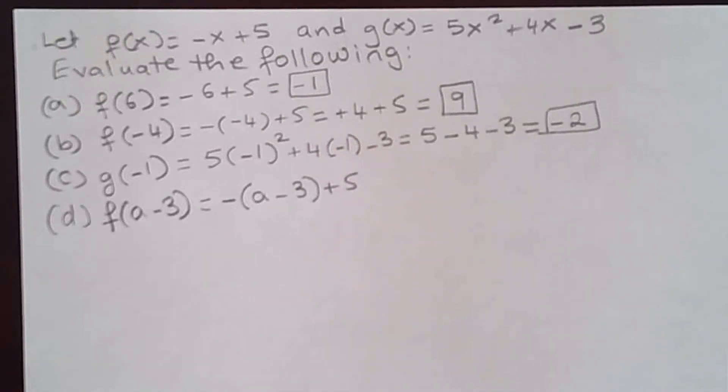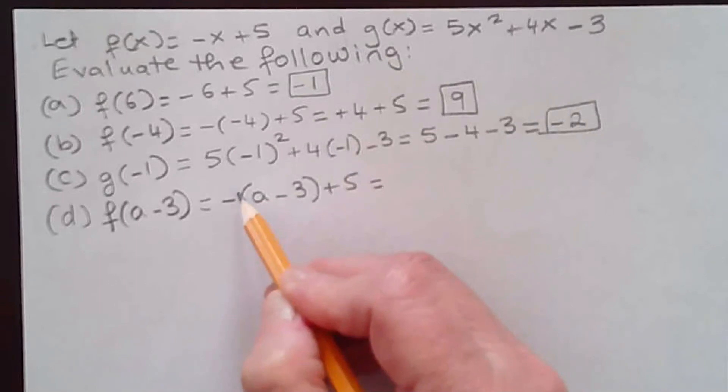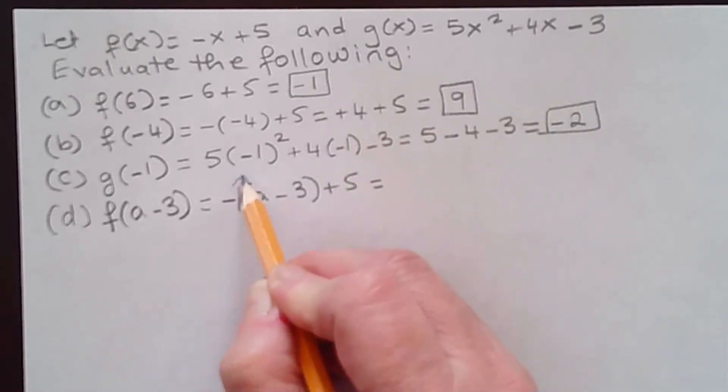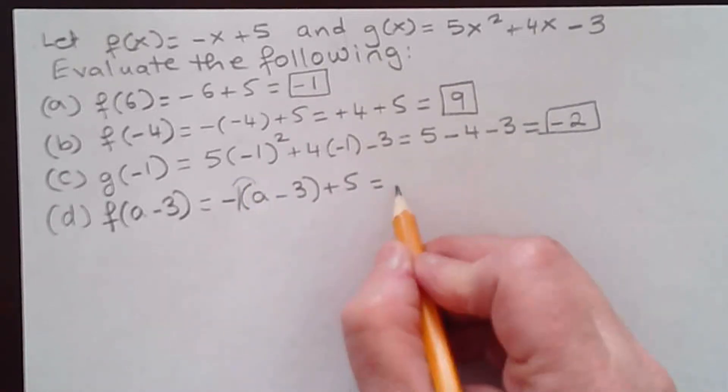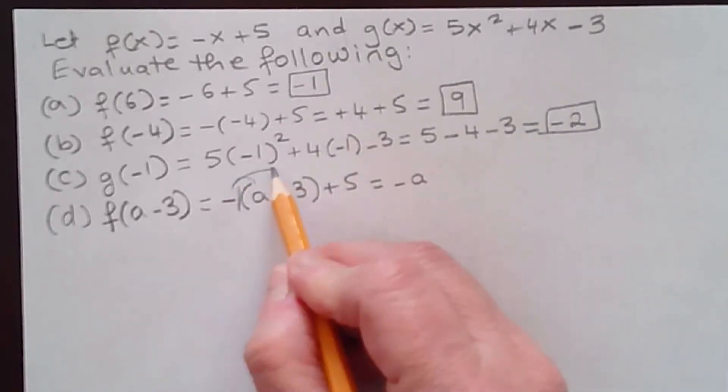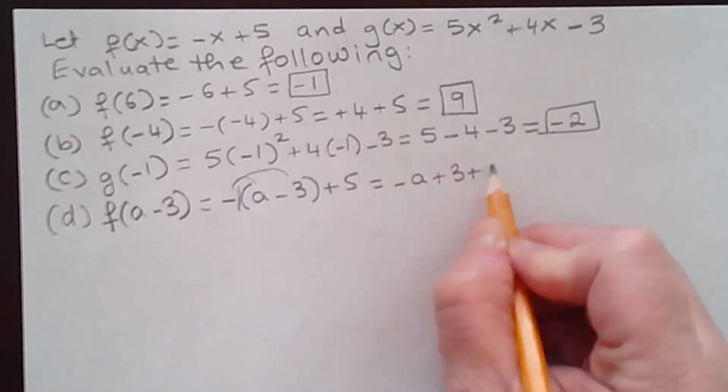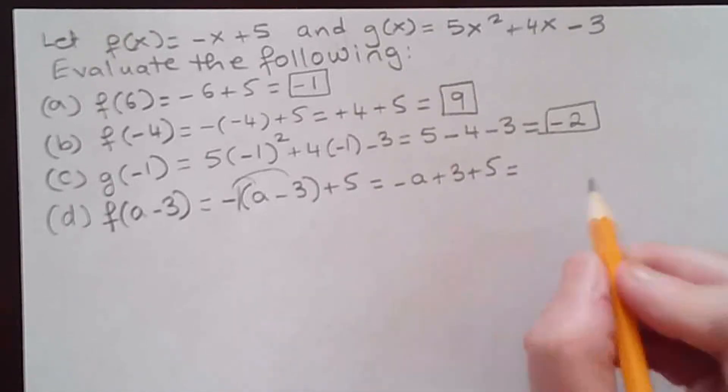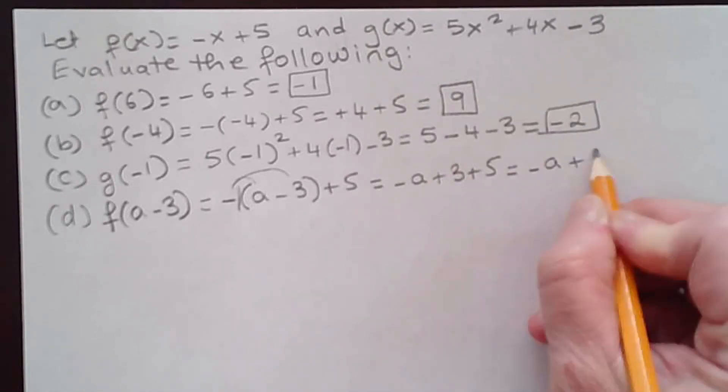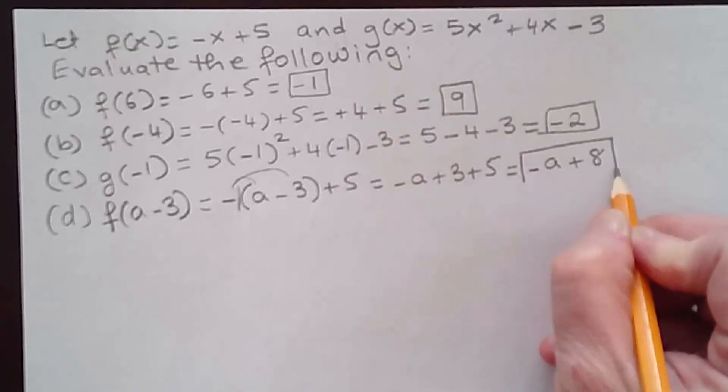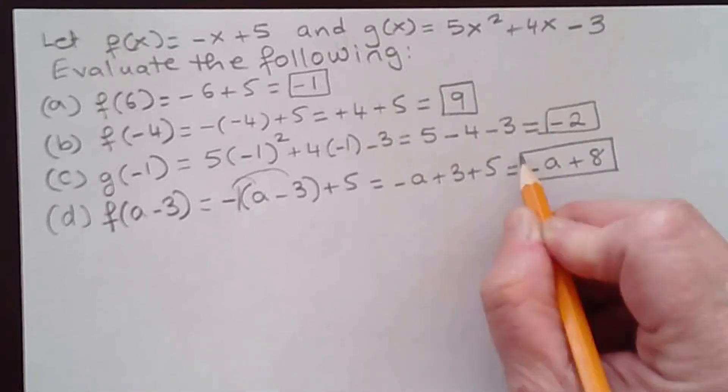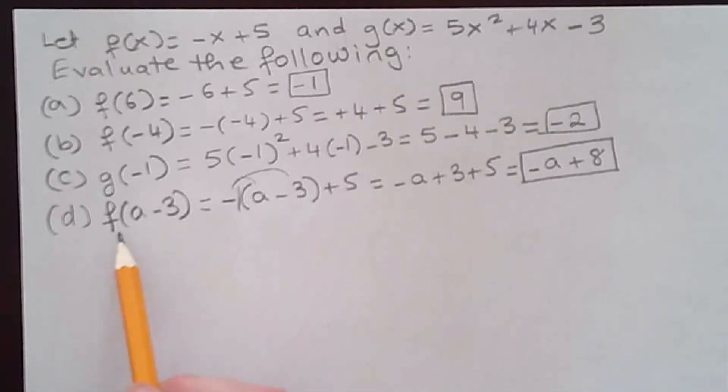Now you need to simplify this. You have a negative sign in front of the parentheses (a - 3). There's an invisible 1 here if you like to put it. You're distributing -1 times a, which is -a, and -1 times -3, which is +3, plus 5. Combining the numbers, we get -a + 8. You're not going to get a value; you're going to get an expression in terms of a since we evaluated f for an expression.